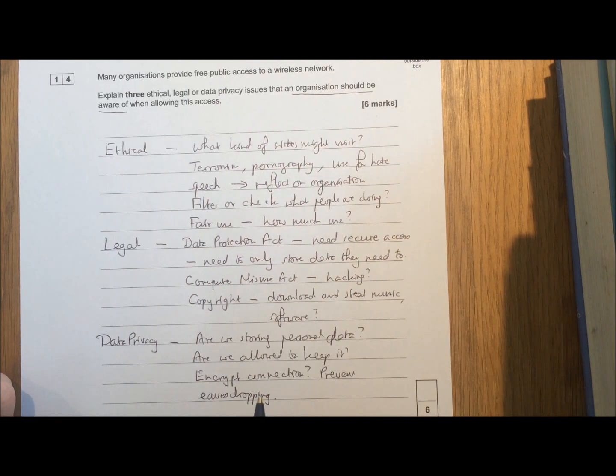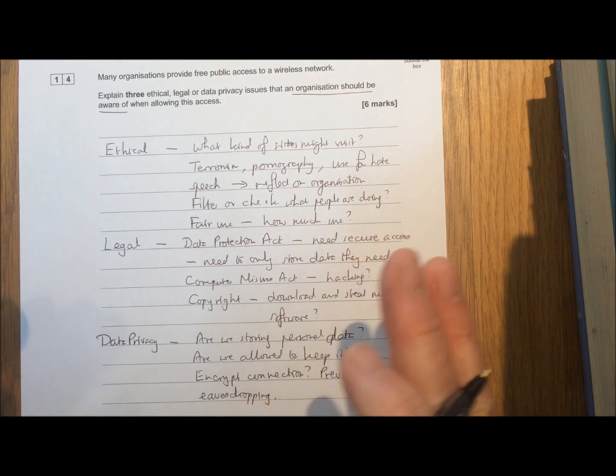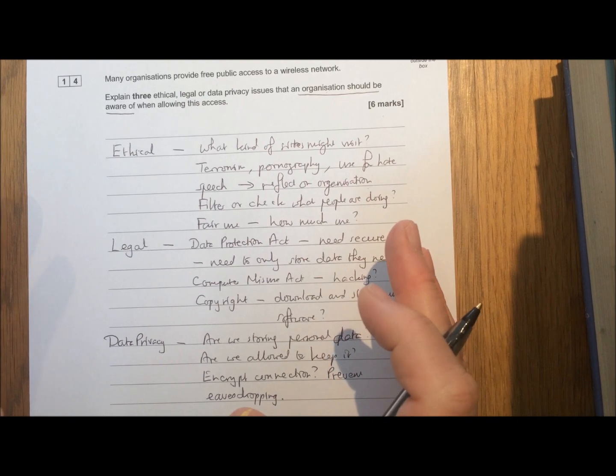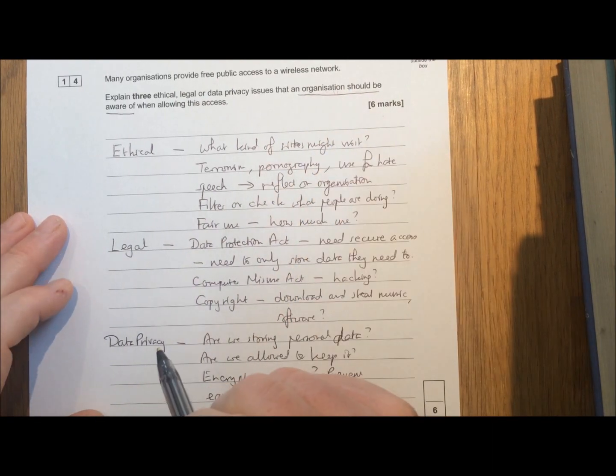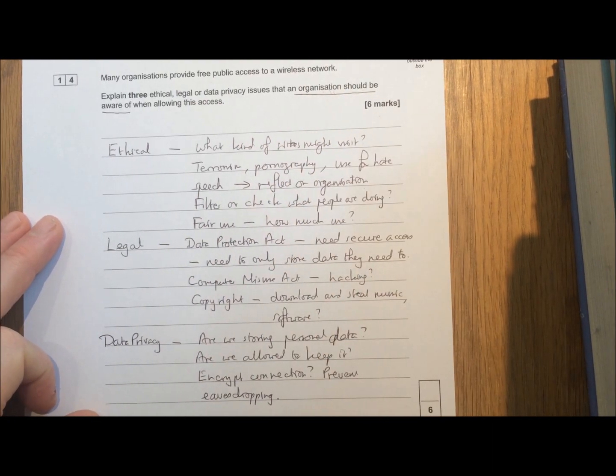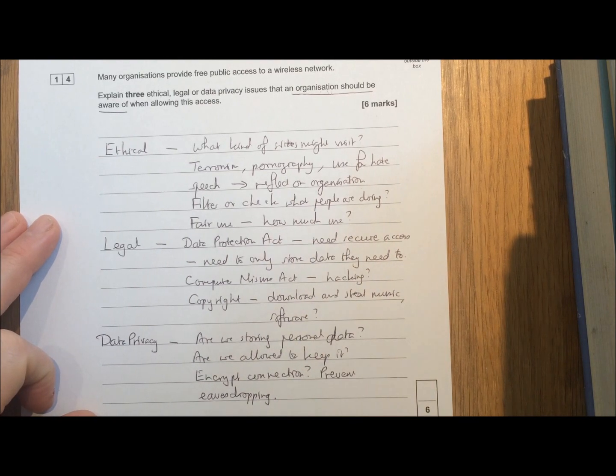One paragraph on each of those points to explain why it's important for the organisation. Then you can have two marks for each, six marks overall.